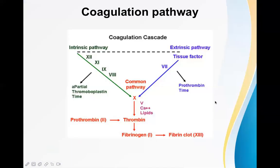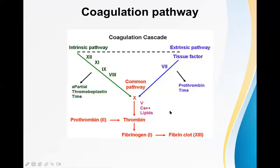Let's start this topic with some physiology that every student already knows. This is the coagulation cascade or coagulation pathway. We have three important coagulation pathways, though some textbooks mention only two. There is the intrinsic pathway, the extrinsic pathway, and the common pathway.